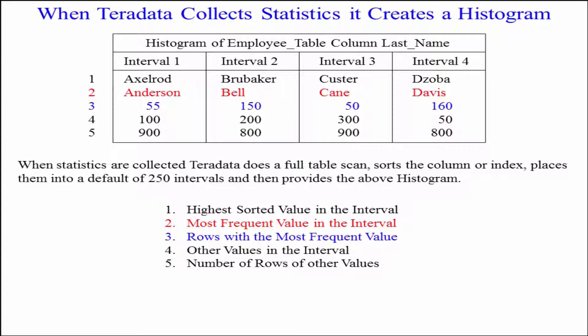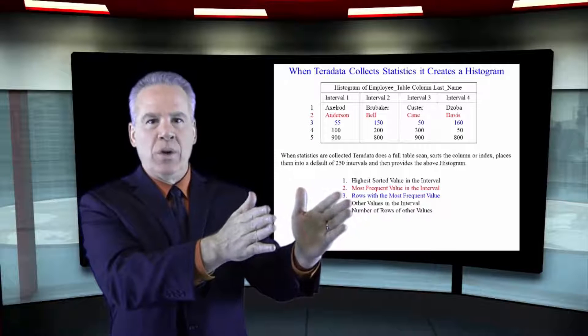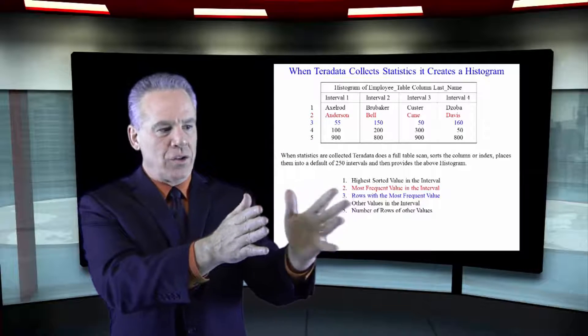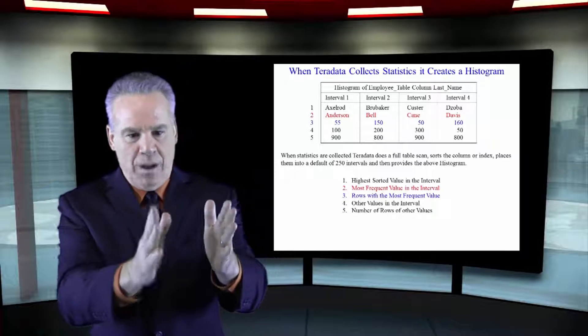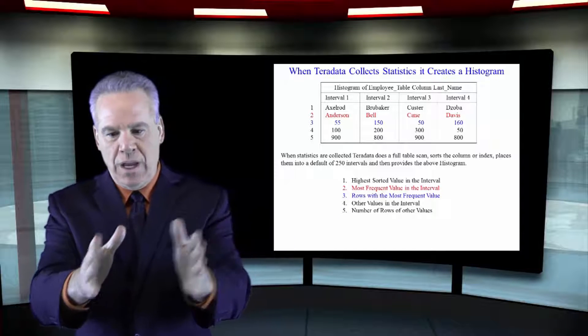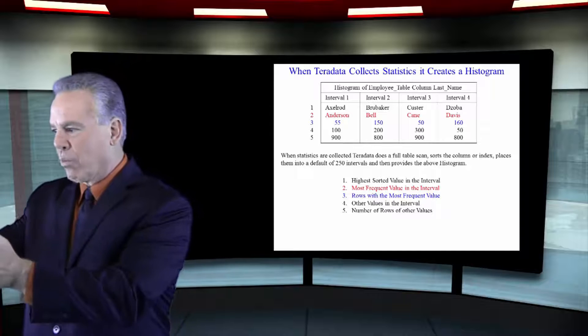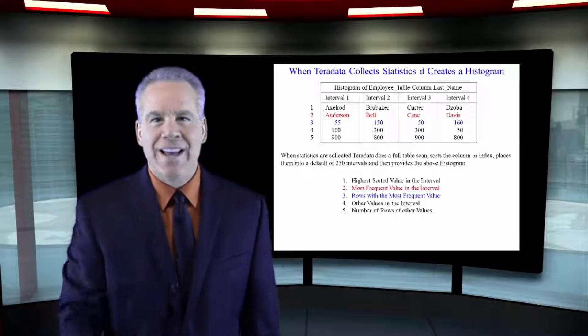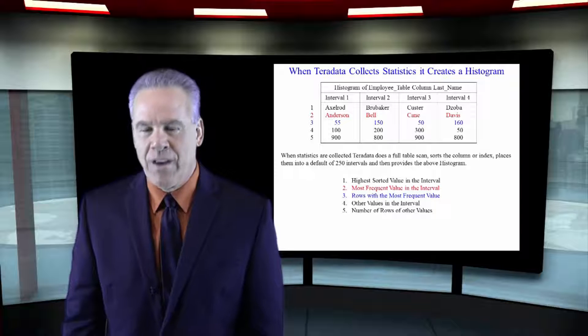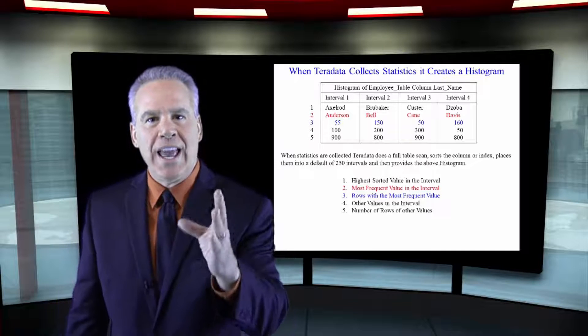it's going to take the 250 million names and chop them into 250 intervals. Since there's 250 million and there's 250 intervals, it says, I'm going to put a million in interval one. And those are the A's. A million in interval two. And it just continues to break them up into 250 different intervals. From there, it will create a histogram.